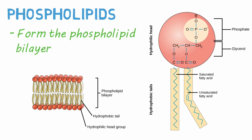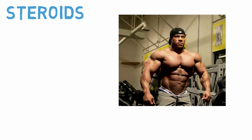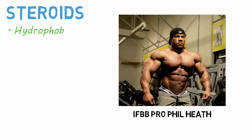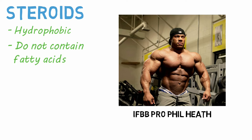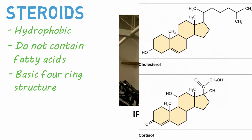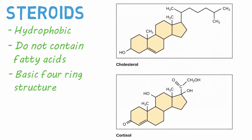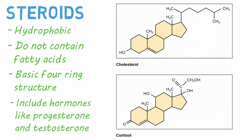At some point I'll make a video discussing just how awesome this cell membrane is. Let's talk about steroids next — and yes, this includes those types of steroids, but that's not the focus of this video. Steroids are hydrophobic and not water-soluble, like other lipids, but they do not contain fatty acids. Instead, they have four cyclic rings linked together. This basic structure gives us common steroids like cholesterol and cortisol, including hormone steroids like progesterone and testosterone, both formed from cholesterol.